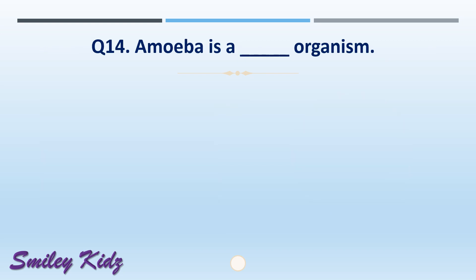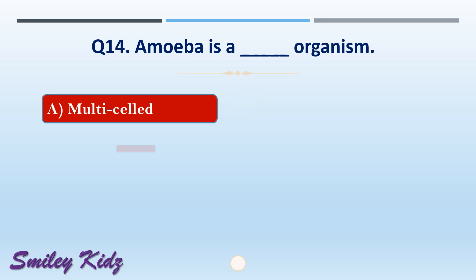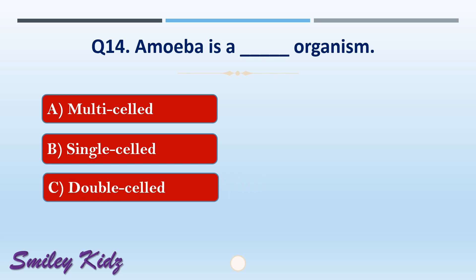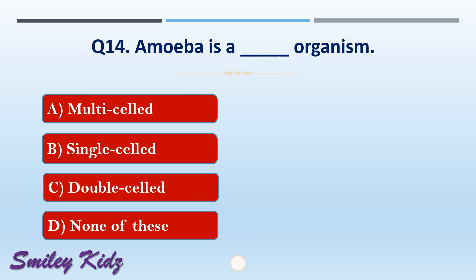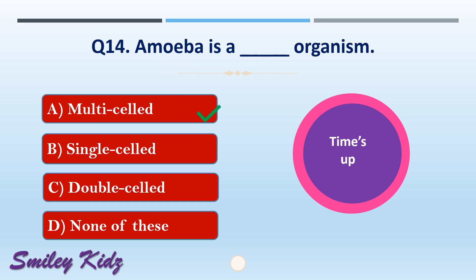Question number fourteen: amoeba is a dash organism. The options are: A) multi-celled, B) single-celled, C) double-celled, or D) none of these. The right answer is option B, single-celled. Amoeba is a single-celled organism.